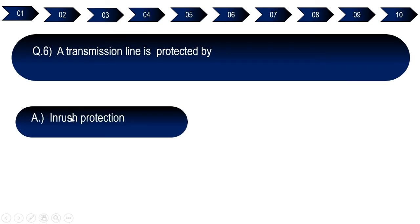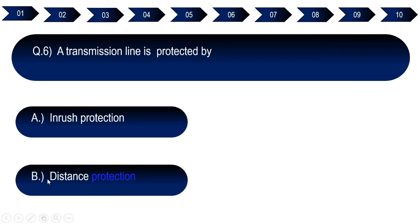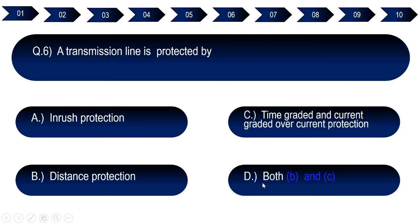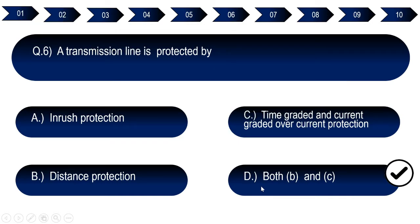Question number six: A transmission line is protected by. Option A: inrush protection. Option B: distance protection. Option C: time graded and current graded over-current protection. Option D: both B and C. The right answer for question number six is option D — both B and C, meaning distance protection and time graded and current graded over-current protection.